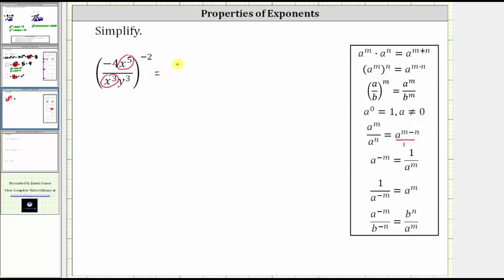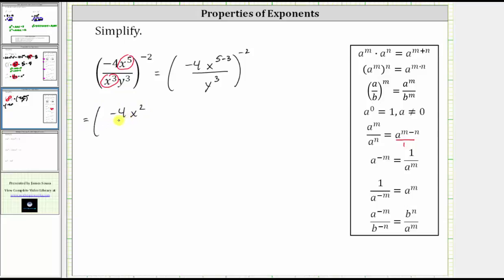So this is equal to: in the numerator we have negative four, and then x raised to the power of five minus three, divided by y to the third in the denominator. All this is still raised to the power of negative two. X raised to the power of five minus three simplifies to x squared, which gives us negative four x squared divided by y to the third, all raised to the power of negative two.